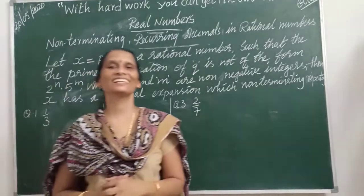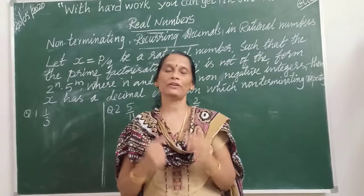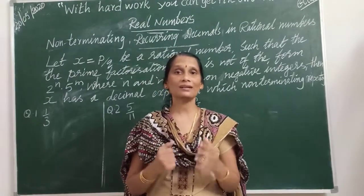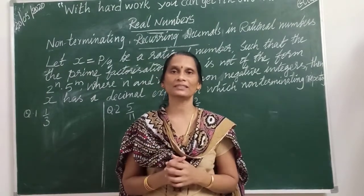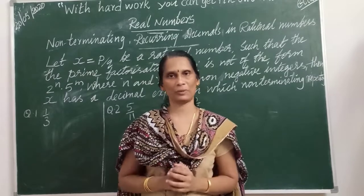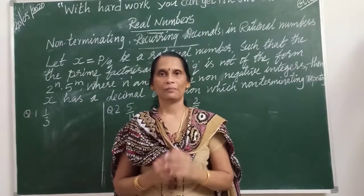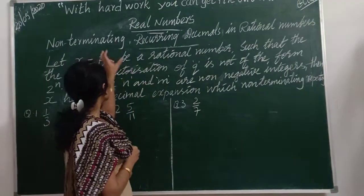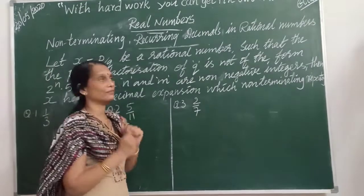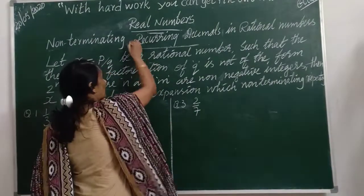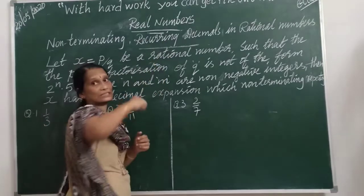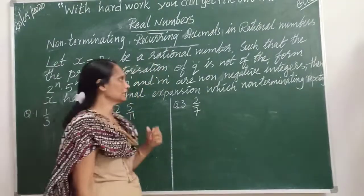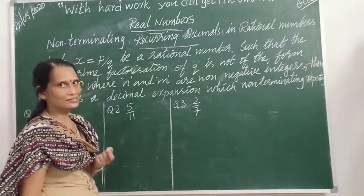Good morning children. In the previous video we discussed rational numbers having terminating decimal expansion. But in this video let us see rational numbers which are having non-terminating and recurring decimal expansion. Recurring means repeating decimal expansion. Let us go through the examples first.